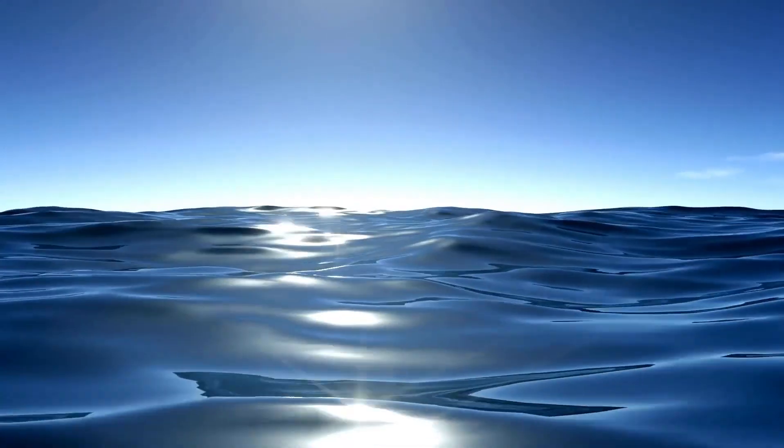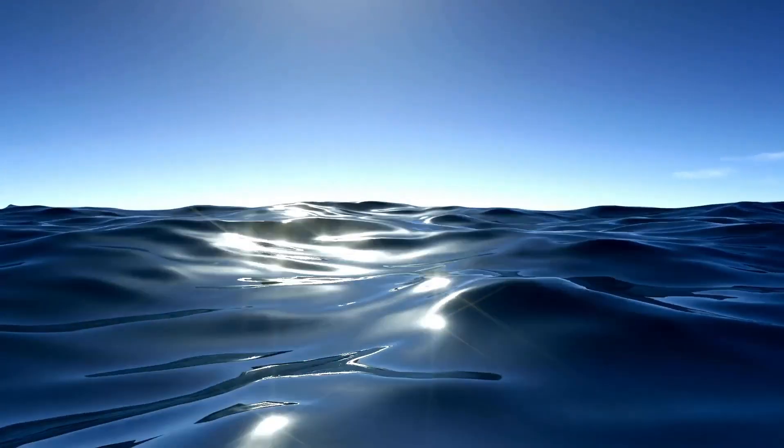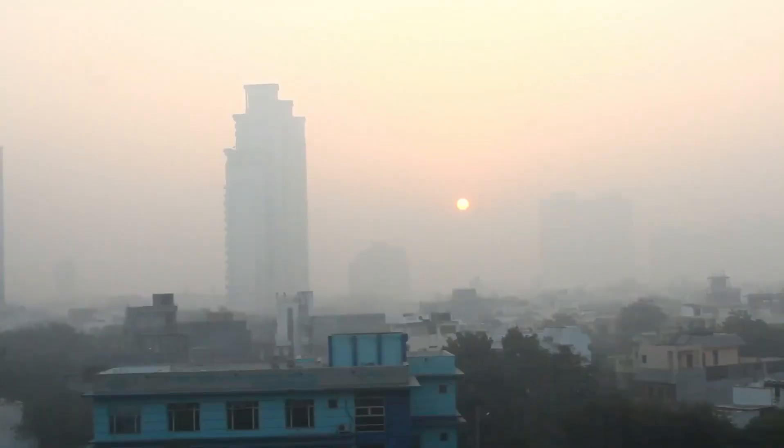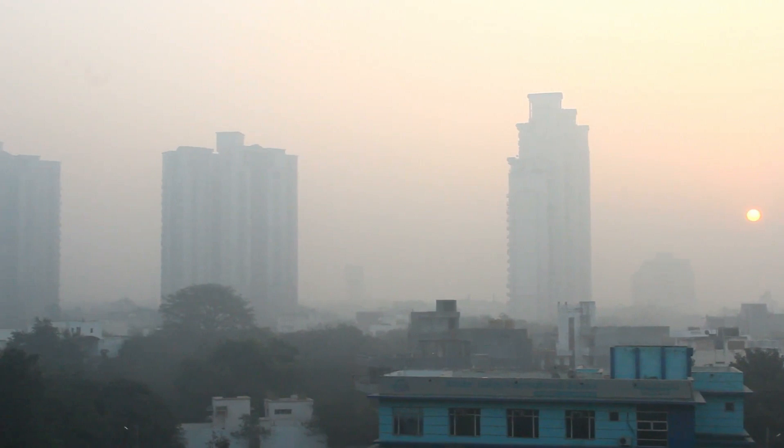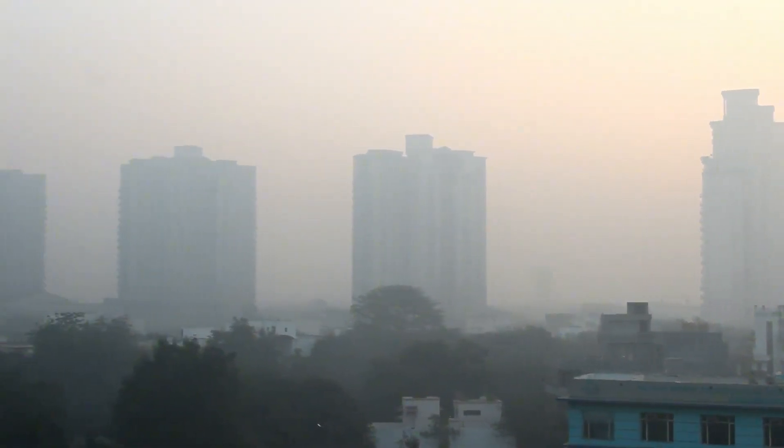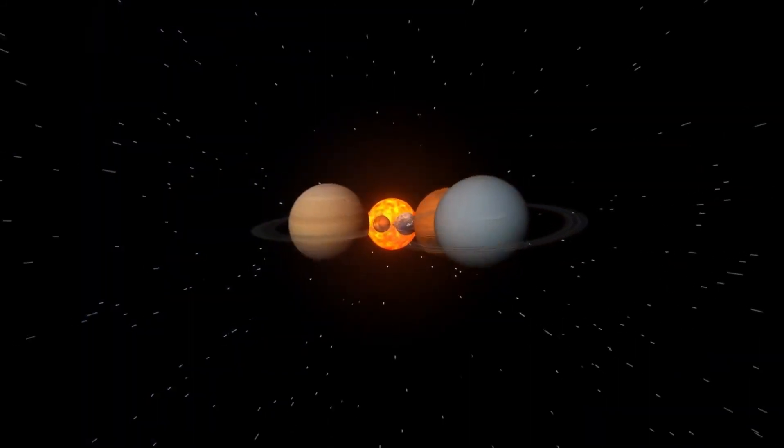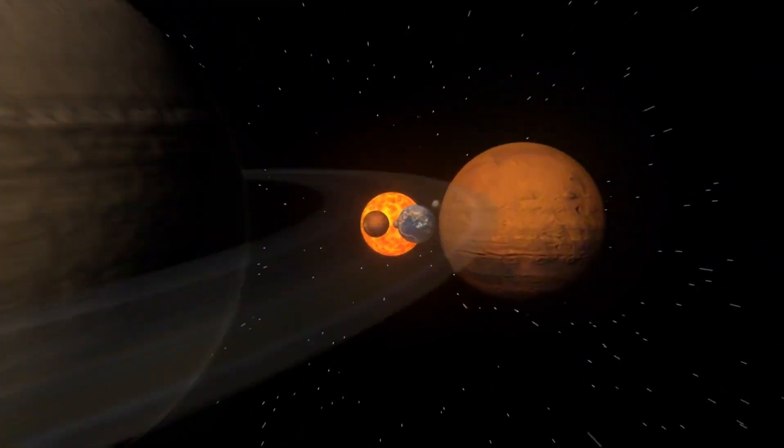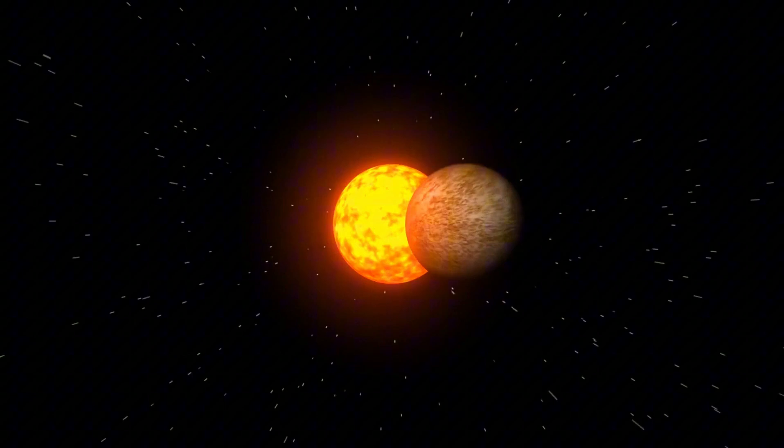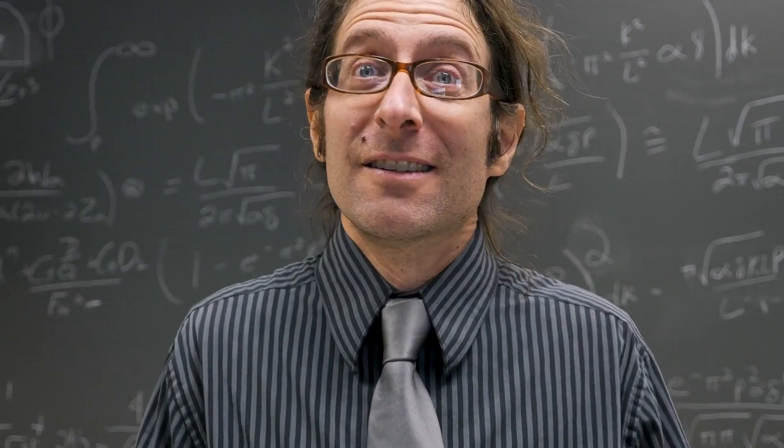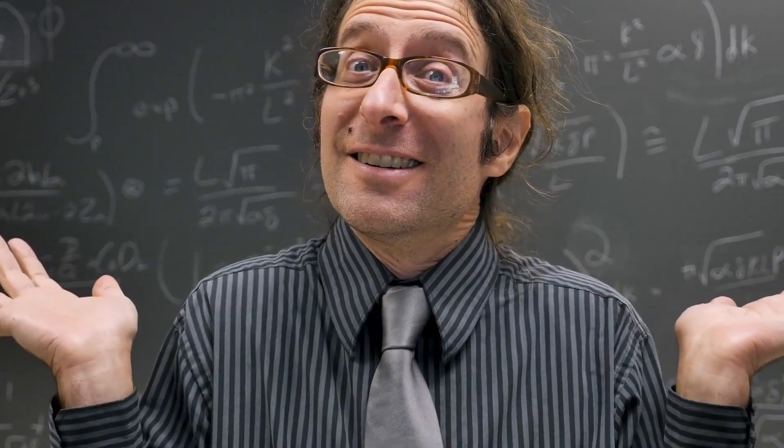To further understand the planet, it's important to know that for K2-18b to support liquid water, it must reside within the habitable zone of its star, where temperatures are neither too hot nor too cold. If it has a stable atmosphere, K2-18b could have temperatures comparable to Earth's. However, its atmosphere, primarily composed of hydrogen, might make its oceans slightly warmer given its proximity to the host star.